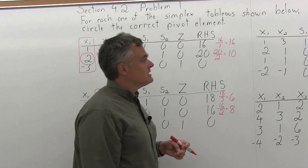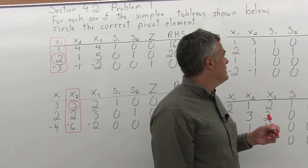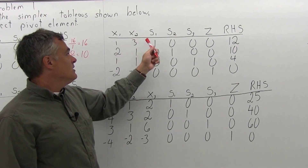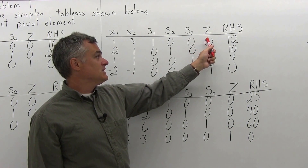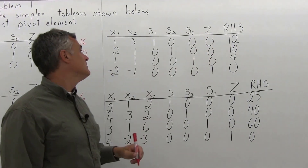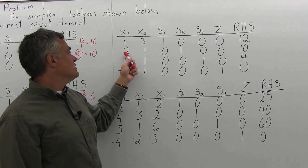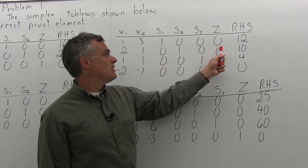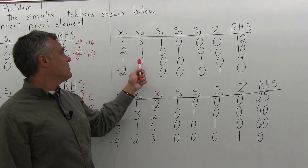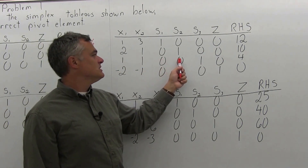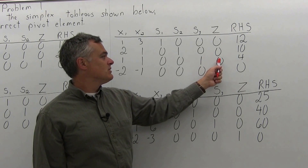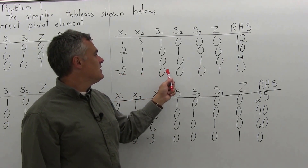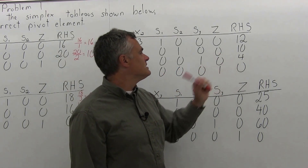The next matrix is a little bit bigger, with 4 rows. The top row is 1, 3, 1, 0, 0, 0, 12. The second row is 2, 1, 0, 1, 0, 0, 10. The third row is 1, 1, 0, 0, 1, 0, 4. And the bottom row is negative 2, negative 1, 0, 0, 0, 1, 0.